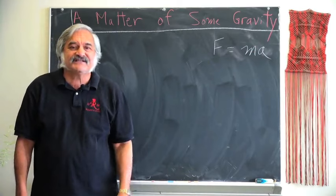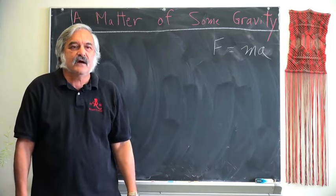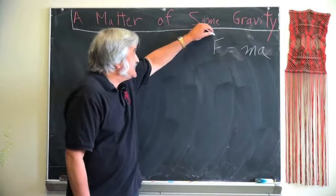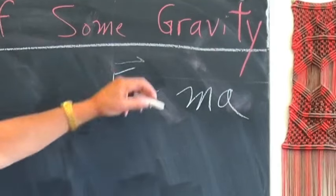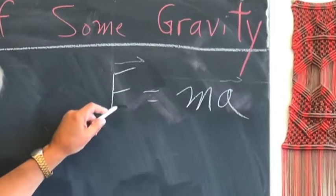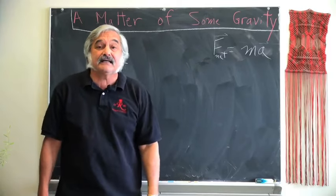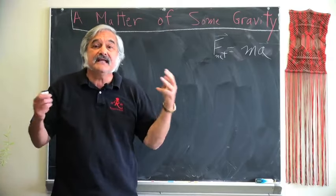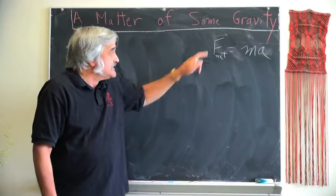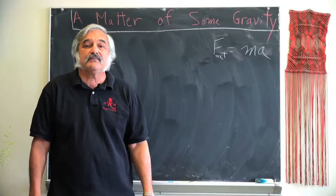This particular equation is surprisingly subtle, and we're going to ignore most of those subtleties, but I should at least tell you that this is a vector equation. Force has a particular direction, and the acceleration also has a particular direction. Also, you need to sum all of the forces that might be acting on an object, so we really have a net force, because forces can pull in different directions, and so this particular equation can yield insight into the way astronomical bodies can move.